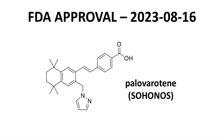Those are some highlights for palaveratine, marketed as Sohonos by Ipsen Biopharmaceuticals. Palaveratine is approved by the FDA for the treatment of heterotopic ossification and fibrodysplasia ossificans progressiva. Of the two indications, media coverage and press releases on the approval tend to focus on FOP, so perhaps that is the primary indication. Palaveratine acts as a selective retinoic acid receptor gamma agonist and suppresses bone tissue formation.